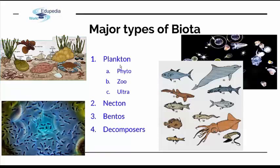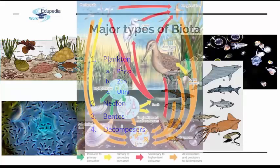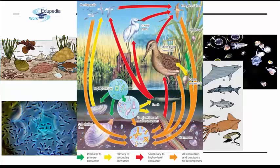Last but not least would be decomposers. They are usually bacteria, feeding on the byproducts of nekton and upper trophic levels. This is how it looks in a random lake — you have plants producing primary matter as primary production, and it goes further down the food chain and back up to the highest trophic levels.